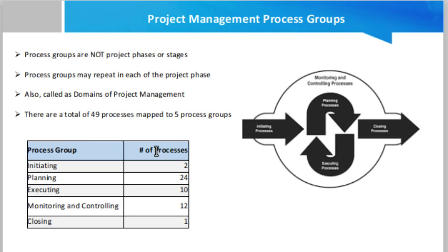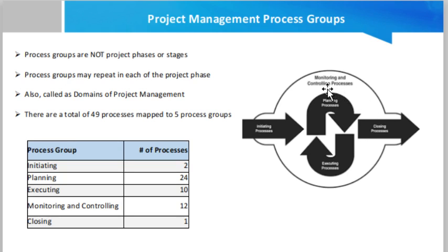Processes have inputs and they use tools and techniques — like the critical path method and work breakdown structure — to produce some result. The overall approach is that we start from the initiating phase, then move to planning, then execution, and then the closing phase. Throughout all these phases, monitoring and controlling has to be done continuously.